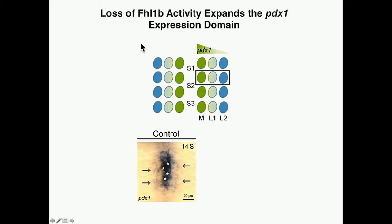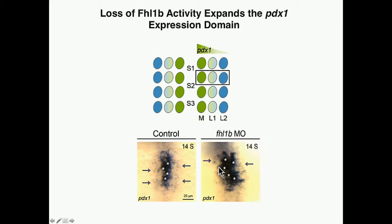In control embryos, PDX1 — the pancreatic determination gene — shows high expression medially and low expression laterally. But when we knocked out FHL1B, there is a dramatic lateral expansion of the PDX1 expression domain, especially the high-level PDX1 expression domain.